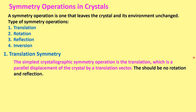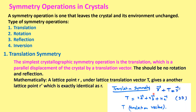In translation symmetry, a parallel displacement of the crystal by a translation vector — translating one point to another — is known as translational symmetry. There should be no rotation or reflection in translational symmetry. Mathematically, if we have a point R and apply a translation vector T, we get a new point R', which should have exactly the identical environment as R.